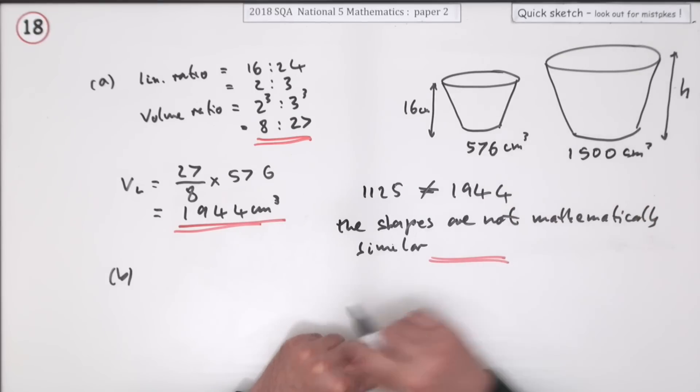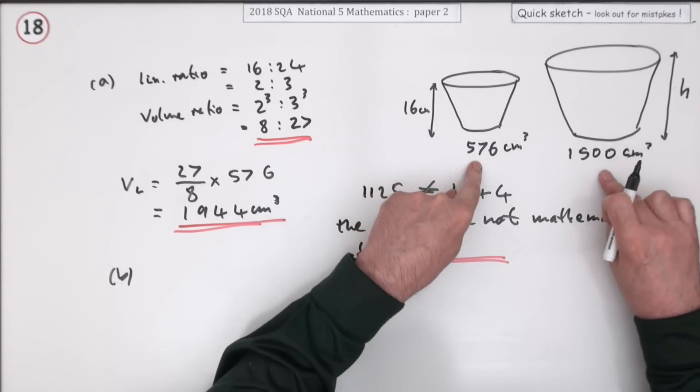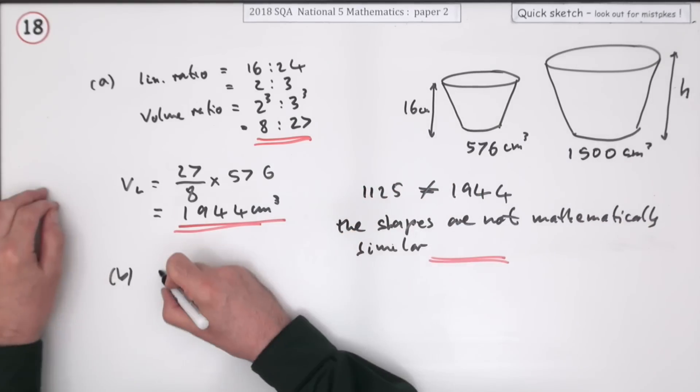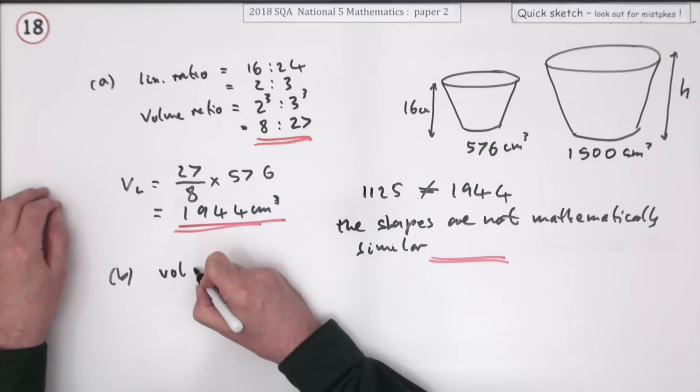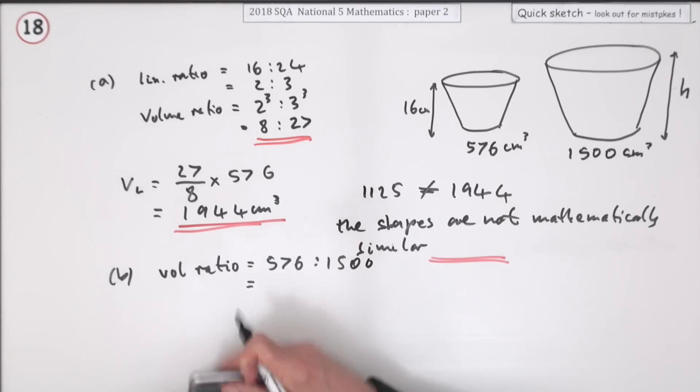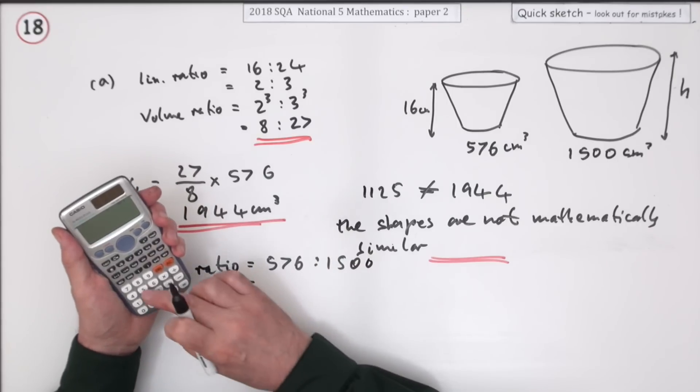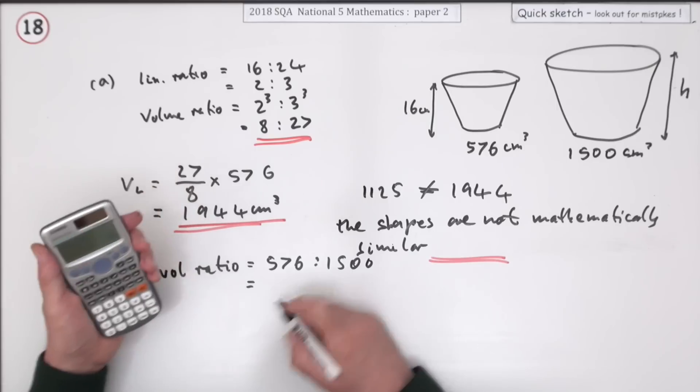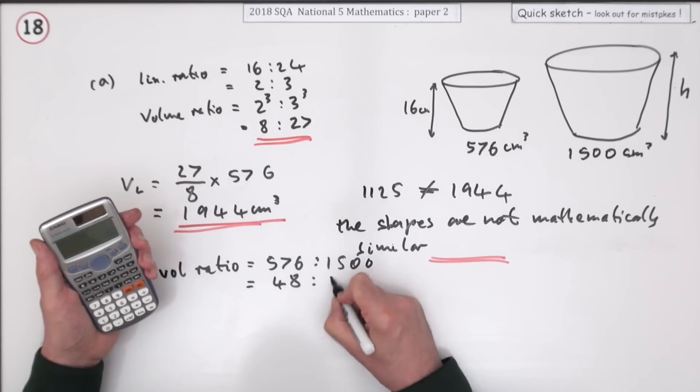What should be the height? This time I know those two things are in the correct ratio, so the volume ratio is 576 to 1500. You don't need to cancel it down, but I'll do that anyway, and it comes to 48 to 125.